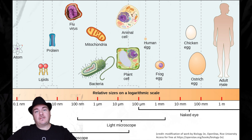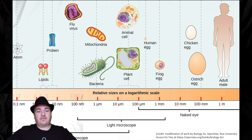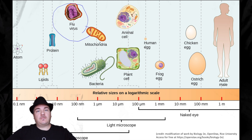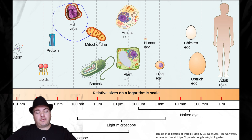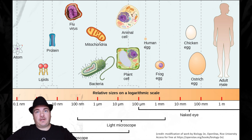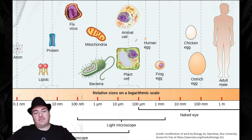But there are other things too small to see with a light microscope — for example, a virus. A virus is so small you can't see it with a light microscope. But if you do want to study a virus, you might be able to use a different type of microscope called an electron microscope, which we'll talk about in a few minutes.